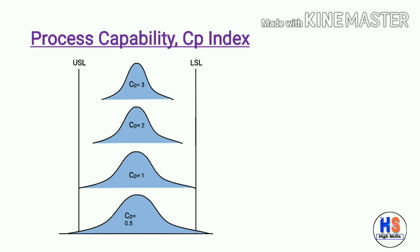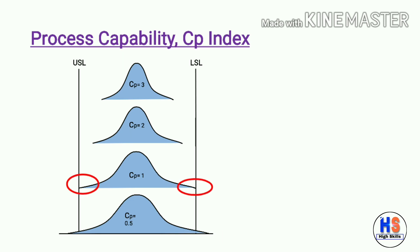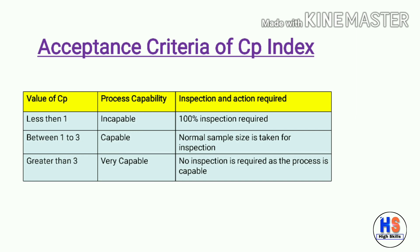The capability of the process depends upon the value of CP — greater the value of CP, smaller the width of the process. If CP equals 0.5, the width of process will be outside the specification limits. If CP equals 1, the width touches USL and LSL. If CP equals 2, the width is smaller. If CP equals 3, the process will be excellent.